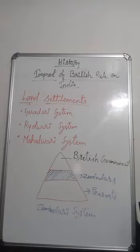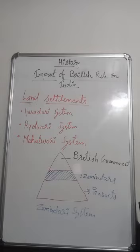The second is the Ryotwari system. Under this system, cultivators got ownership of land and land revenue was fixed for 30 years. This system was introduced in the Carnatic and Mysore region.